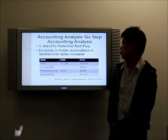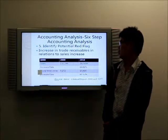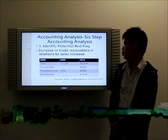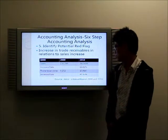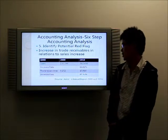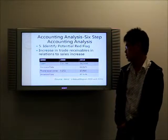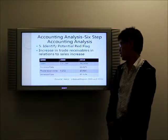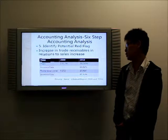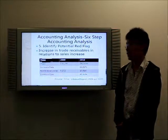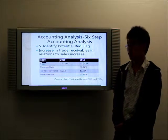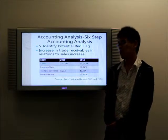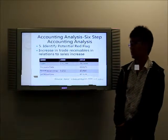Now let's have a look at the red flags. The red flag is the increase in trade receivables in relation to the sales increase. According to AACO's annual report, we can see that sales increased about 68% and trade receivables increased around 82%. This suggests that AACO is relaxing its credit policies, which could cause the risk of facing receivable write-offs.